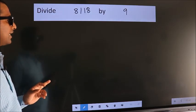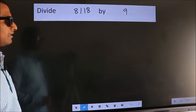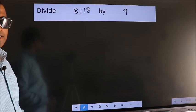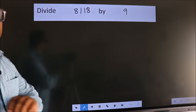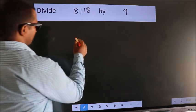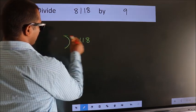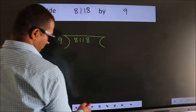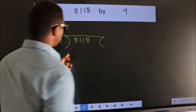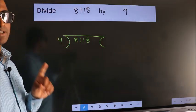Divide 8118 by 9. To do this division, we should frame it in this way. 8118 here, 9 here. This is your step 1.